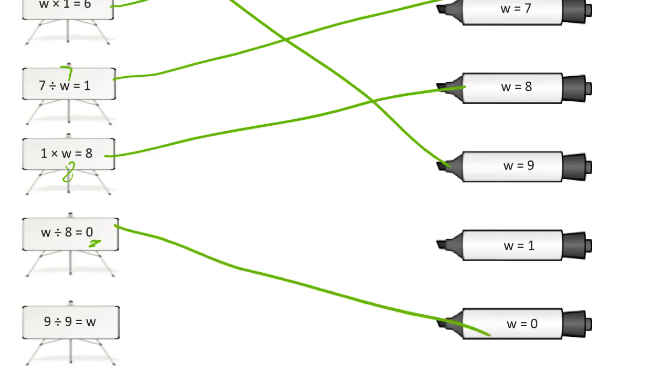And 9 divided by 9, any number divided by itself equals 1. So we're going to find that match right there.